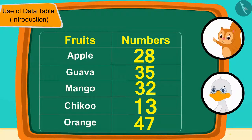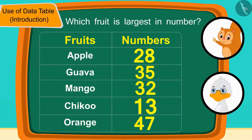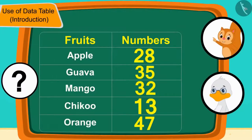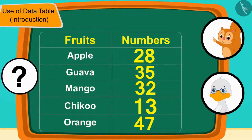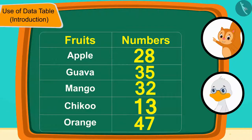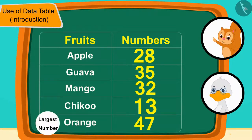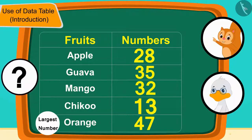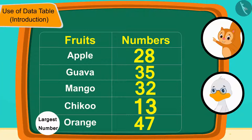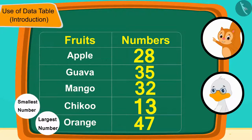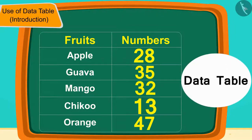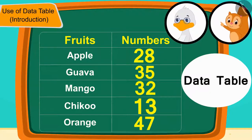Chanda asked Uncle — can you now tell which fruit is largest in number? Children, by looking at this table, can you tell? The total number of oranges, 47, is the largest. Can you tell which fruit is the smallest in number? The number of chikkus, 13, is the smallest.